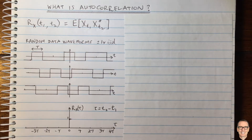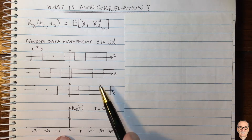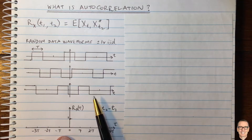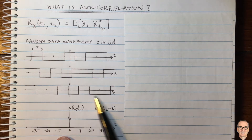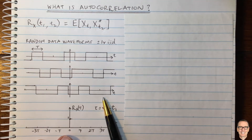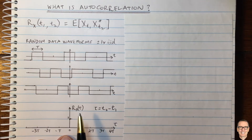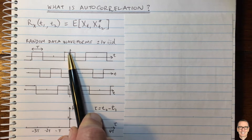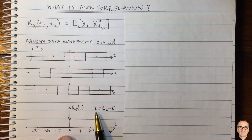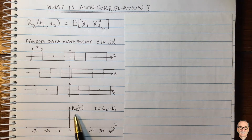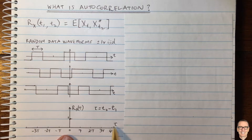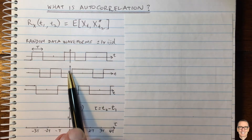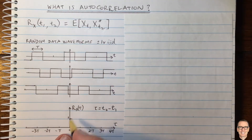Let's plot that on the autocorrelation graph. This system is stationary — for more on stationary random processes, check the description below. For a stationary system, only the difference between the two times matters, which I'll call tau. When T1 equals T2 equals zero, tau is zero. On the autocorrelation function axis, at tau equals zero, the expected value equals plus one. That's this point here. Now let's plot it for some other times.